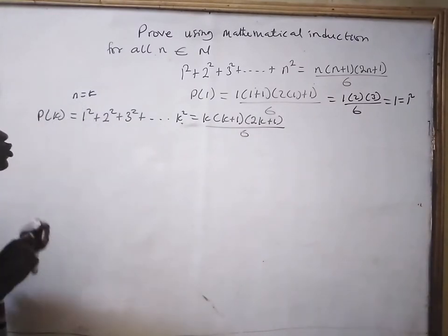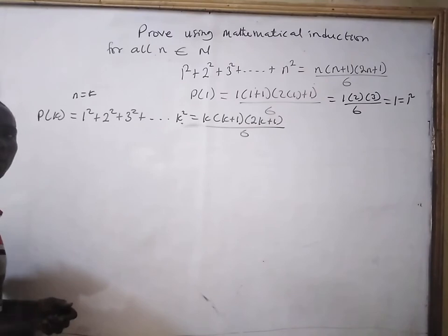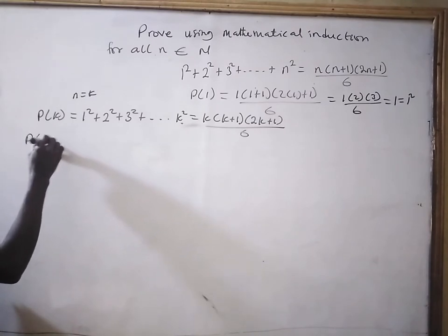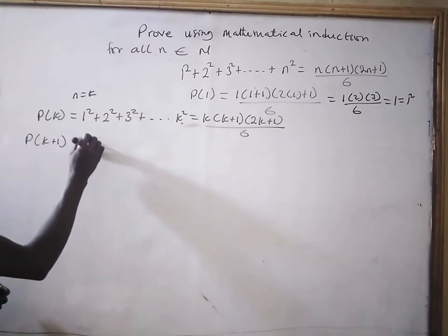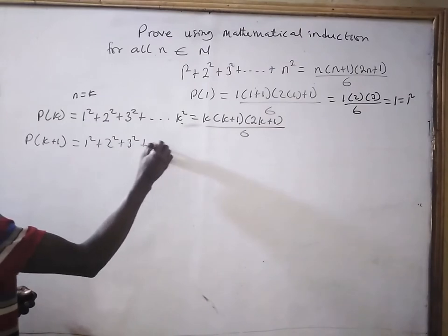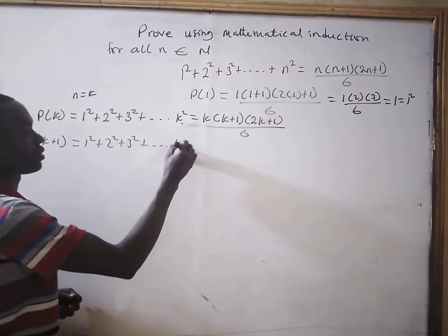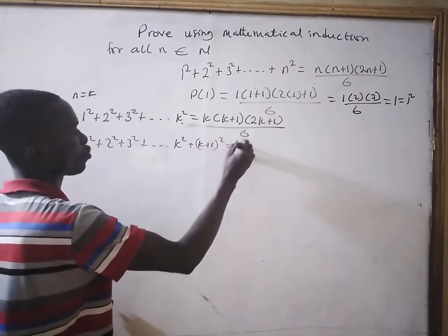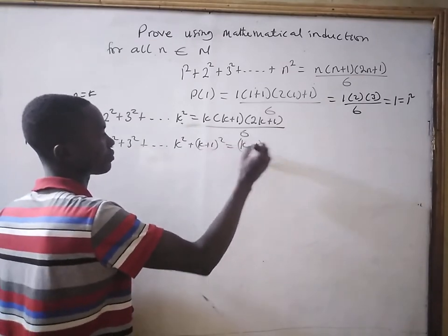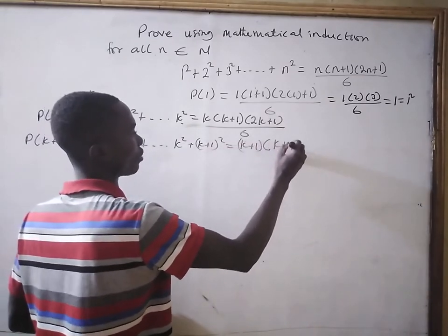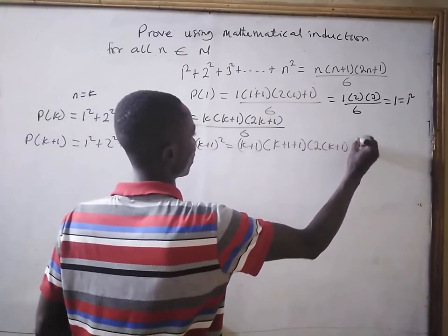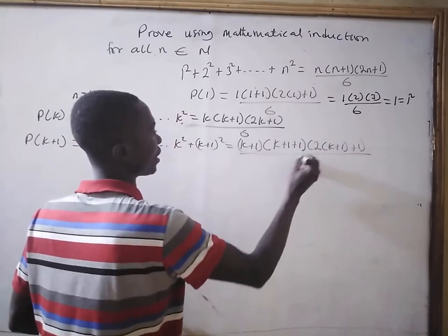Now, using this hypothesis, we are going to prove that P(k+1) is also true. So, we have P(k+1): 1 squared plus 2 squared plus 3 squared plus ... plus k squared plus (k+1) squared equals (k plus 1) times (k plus 1 plus 1) times (2 times (k plus 1) plus 1) all divided by 6.